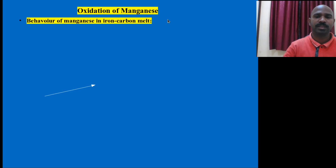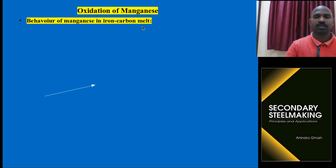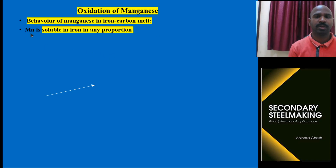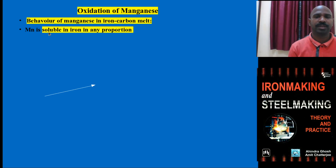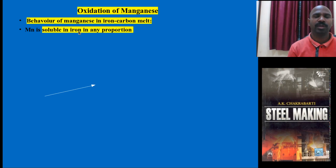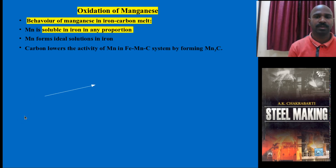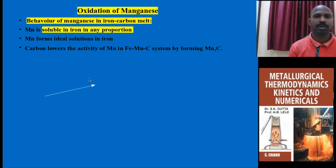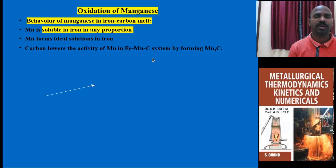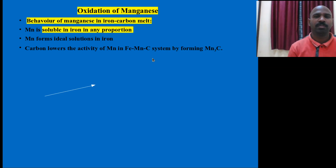Now let me talk about oxidation of manganese. In iron-carbon melt in the case of steel, manganese and iron have very little difference in atomic number, so manganese easily dissolves in iron in any proportion. In ideal solution form, it follows Raoult's law in a straight line. It does not show positive or negative deviation — it follows ideal behavior.